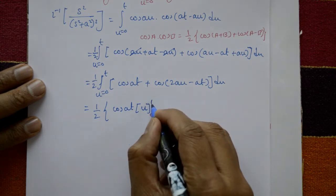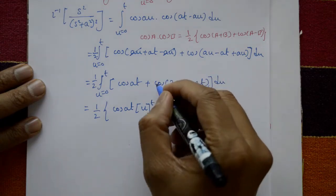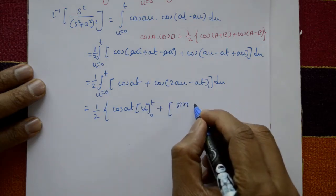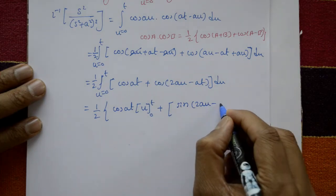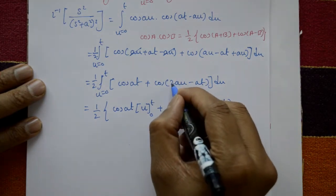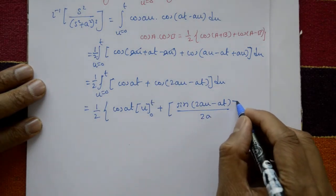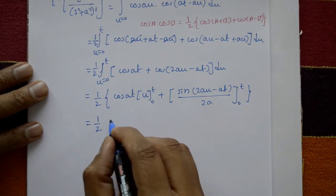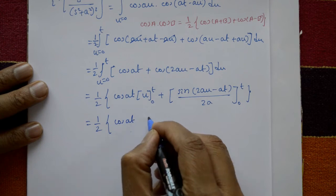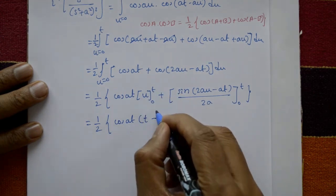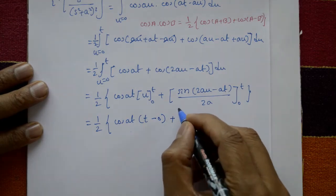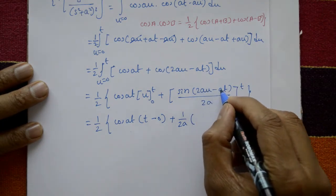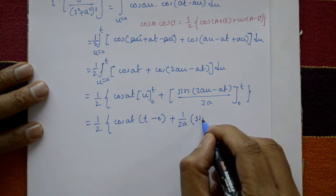Integrating: cos(at) is constant, so its integral with respect to u gives u·cos(at), evaluated from 0 to t. The integral of cos(2au − at) with respect to u gives sin(2au − at) divided by 2a, evaluated from 0 to t. This gives (1/2)[t·cos(at)] + (1/2a)[sin(at)].